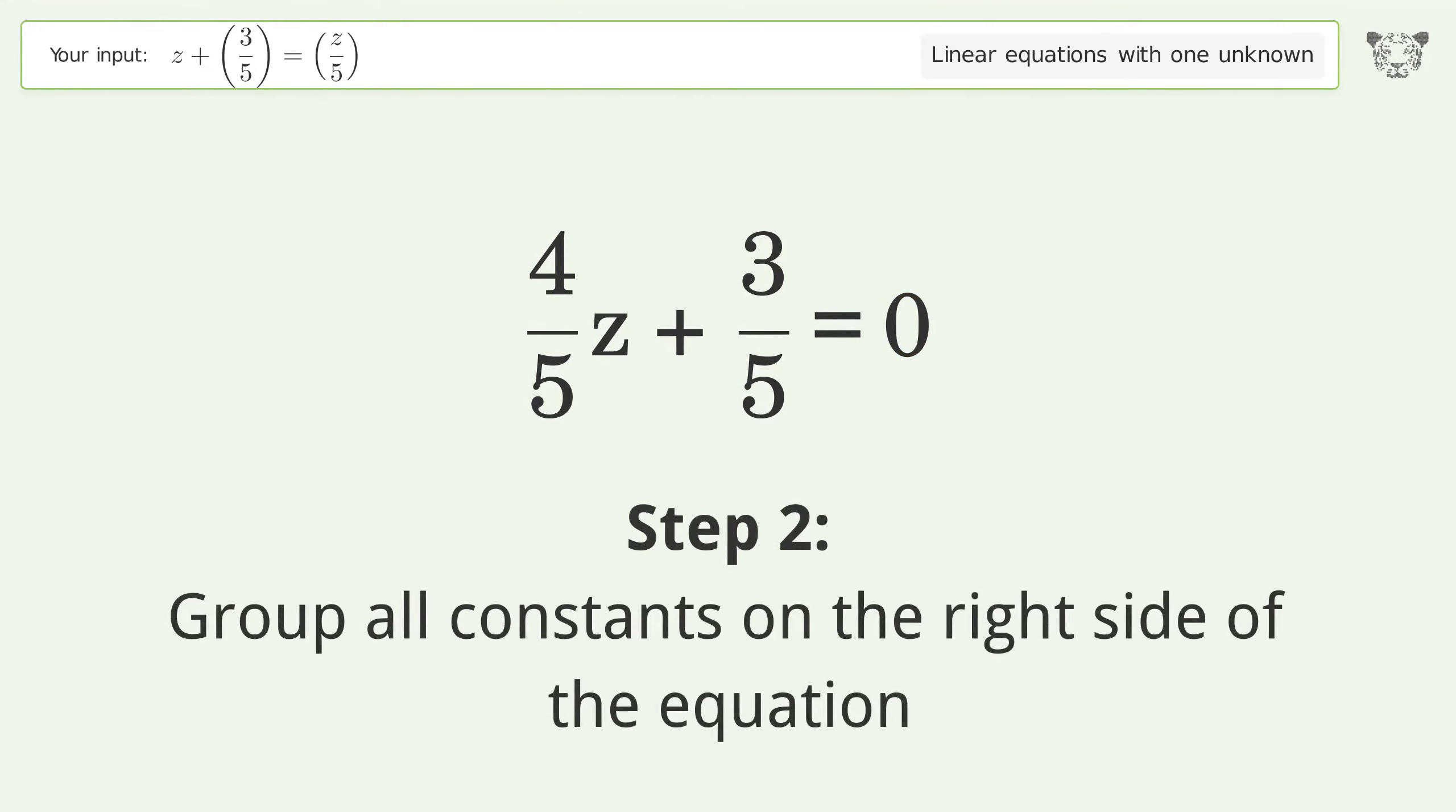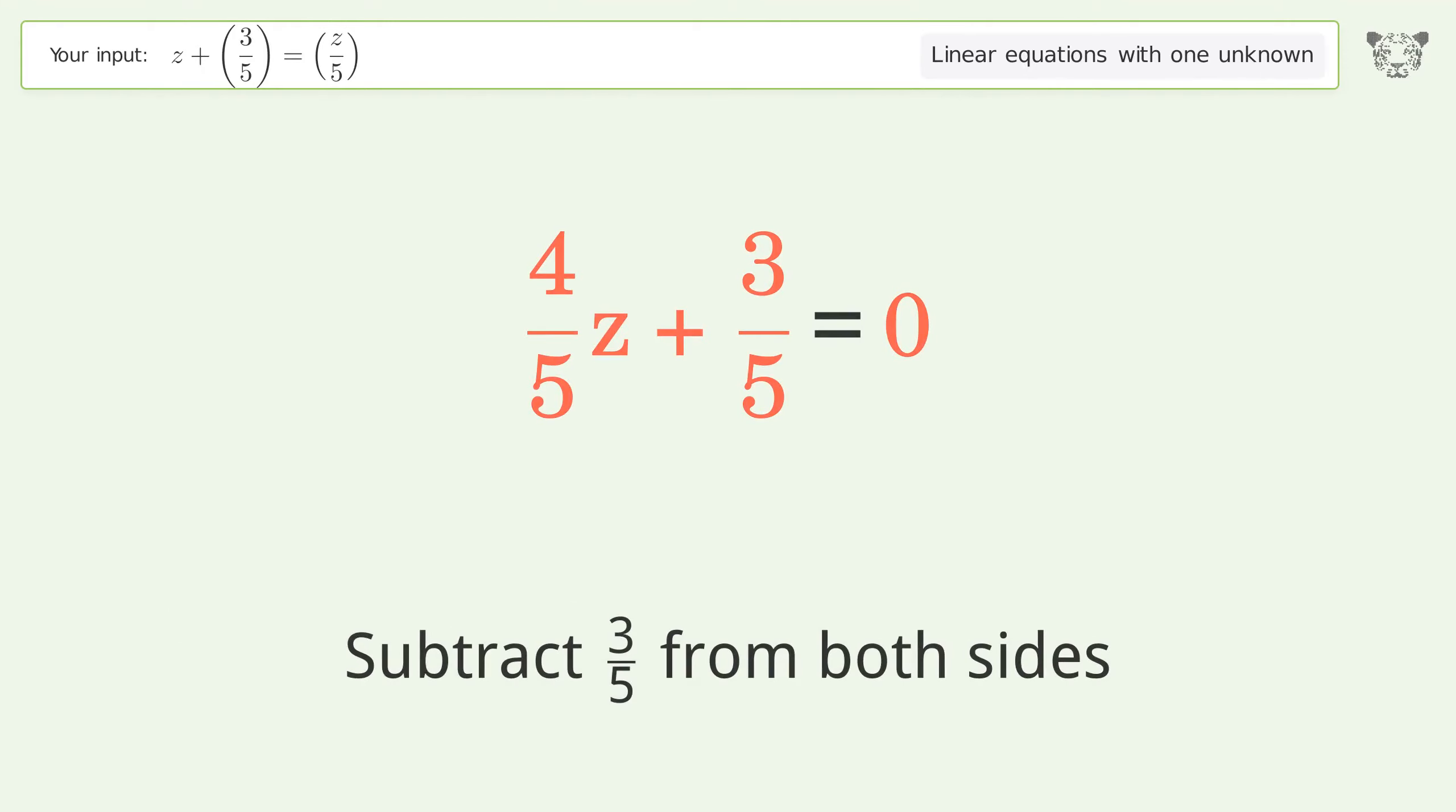Group all constants on the right side of the equation. Subtract 3 over 5 from both sides.